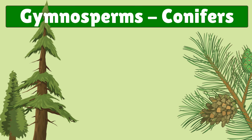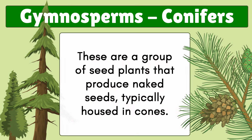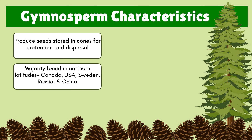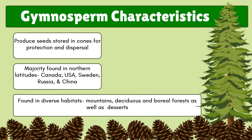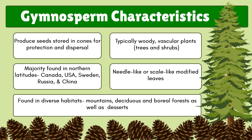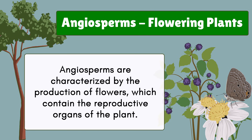Next are Gymnosperms, also called conifers. These are seed plants that reproduce via naked seeds, which are enclosed in cones that protect them. The majority are found in northern latitudes like Canada, USA, Sweden, Russia, and China. They can grow in diverse habitats including mountains, forests, and deserts. They are woody, vascular plants including trees and shrubs, with needle-like or scale-like leaves.